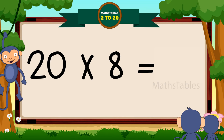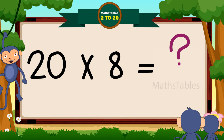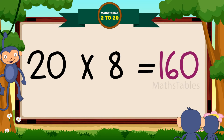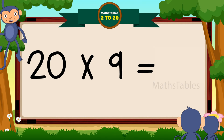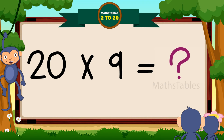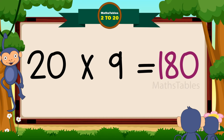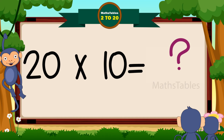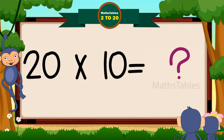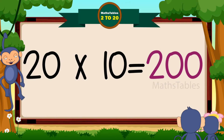2 7's are 140, 2 7's are 140. 2 8's are 160, 2 8's are 160. 2 9's are 180, 2 9's are 180. 2 10's are 200.